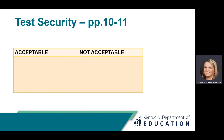The ESAR is considered secure testing material and must follow the administration code and regulations established for all state-required assessments and optional tests administered by school personnel that are reported in Kentucky's accountability system. 703 KAR 5080, Administration Code for Kentucky's Educational Assessment Program, can be reviewed in its entirety on the KDE website. The link to the regulation is provided on page 10. Page 10 of the Administration Guide also contains concepts selected from the regulation's test security section that more closely address a rating scale assignment like the ESAR. Be sure to review and follow all test security requirements.